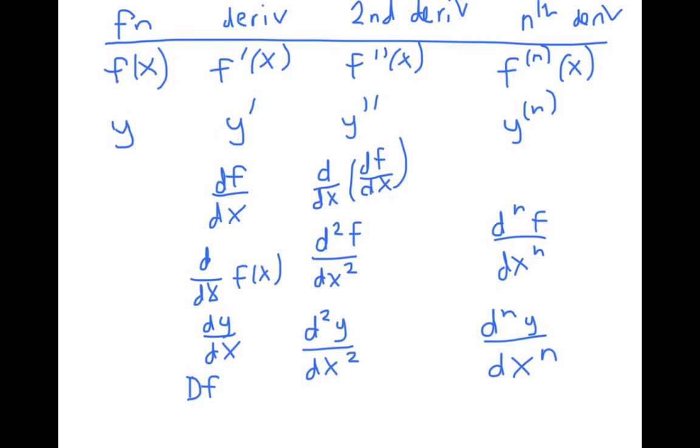When using Leibniz notation, if we want to emphasize that we're evaluating our derivative at a particular value of x, we might write something like at x equals three, or at x equals a using a vertical line.